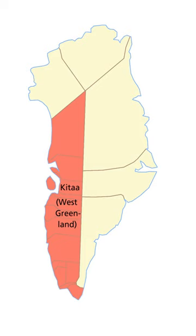Qatar, originally Vestgrondland, is a former administrative division of Greenland. It was by far the most populated of the divisions, being home to almost 90% of the total population. The divisions were de facto replaced by statistical regions after Greenland got home rule in 1979.